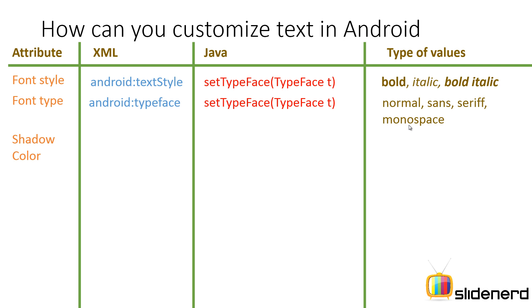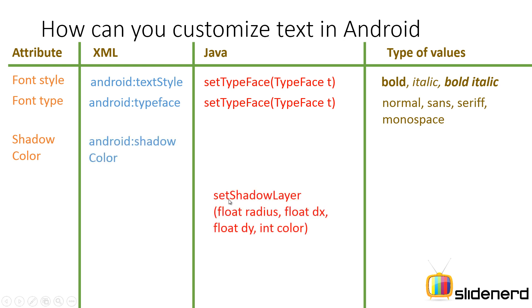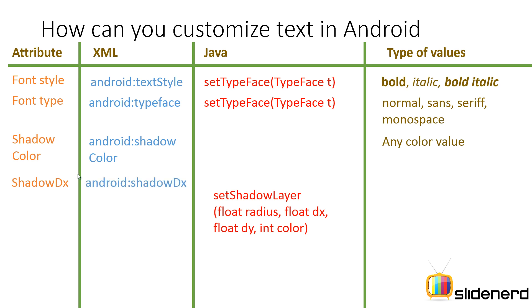Shadow has four attributes. One of them is shadow color, supported by android:shadowColor in XML. There is a single method in Java that supports all four shadow attributes: the radius, the offset along the x-axis, the offset along the y-axis, and the color. You can take any color value for shadow color. Then you have shadowDx, which is the distance along the x-axis from the original text — exactly how far the shadow should be. In XML, android:shadowDx controls this value, and it is a floating point value.